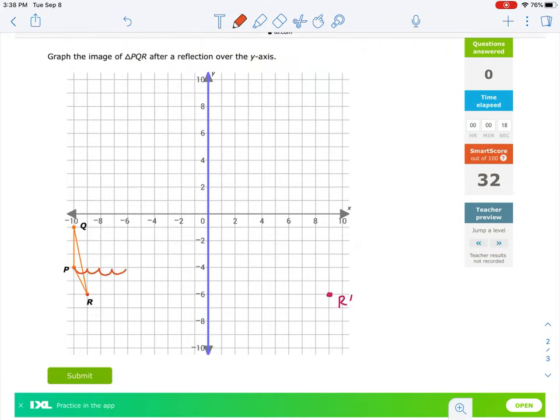Point P is 10 spaces across and 10 spaces down. So P prime is going to land right here.